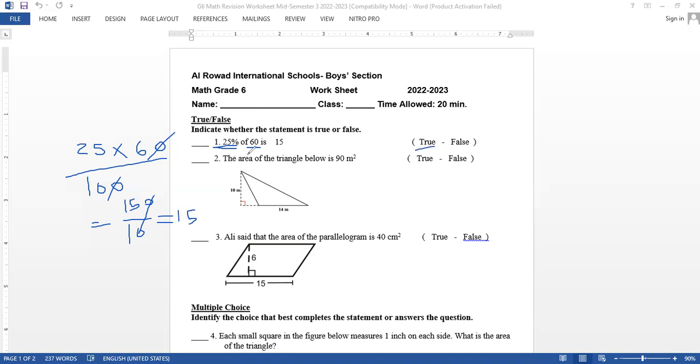Now, second question: the area of the triangle below is 90 meters squared. To find the area of a triangle, I multiply base by height and divide by 2.